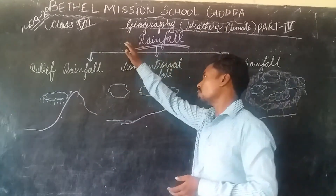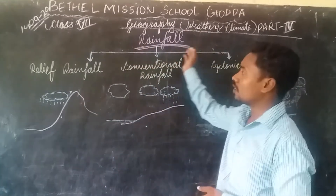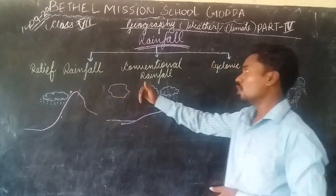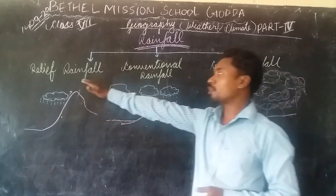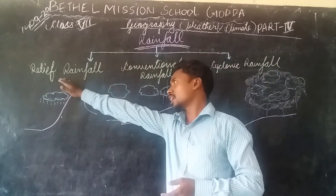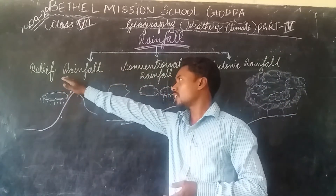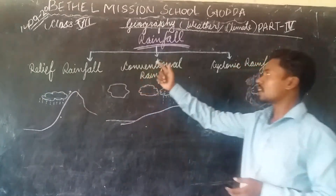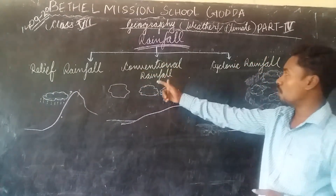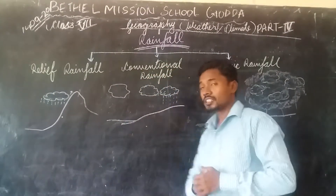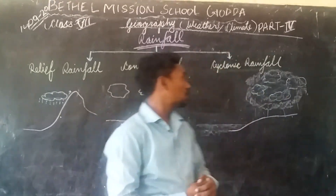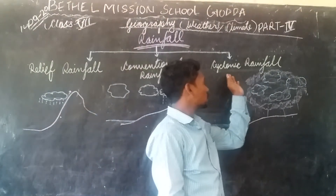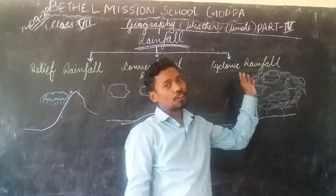The first type of rainfall is relief rainfall, the second one is conventional rainfall, and the third type of rainfall is cyclonic rainfall.